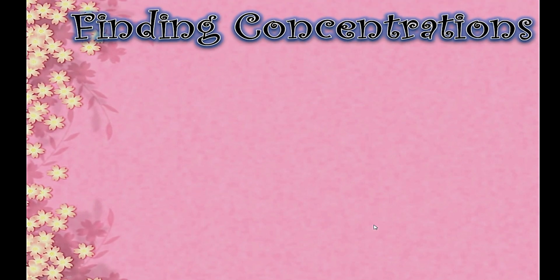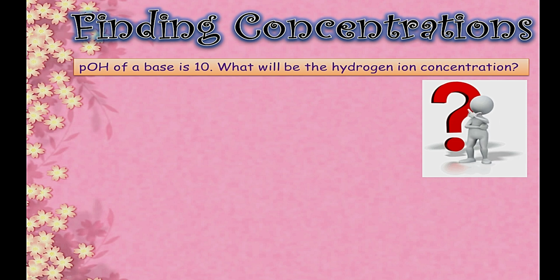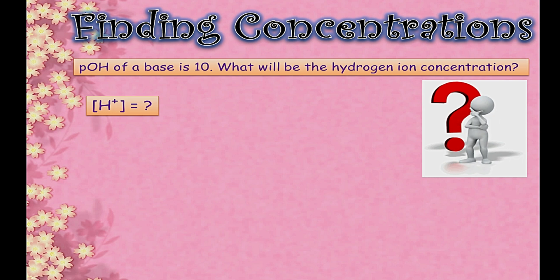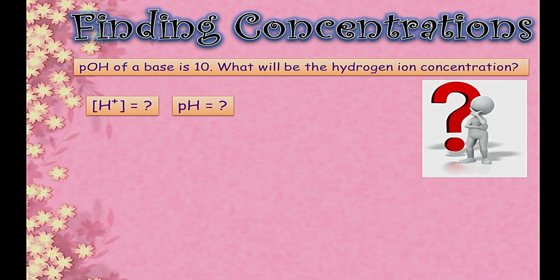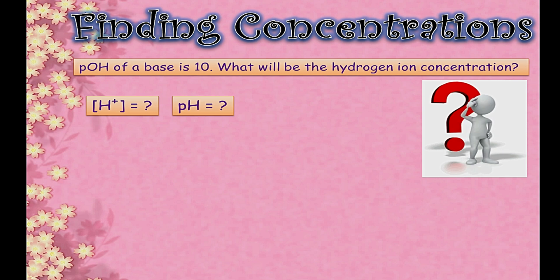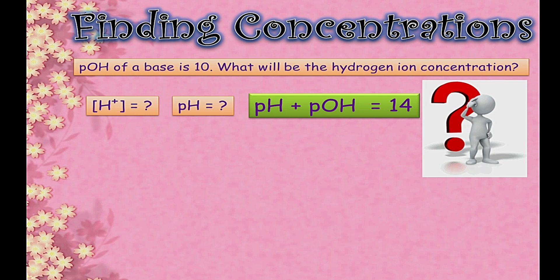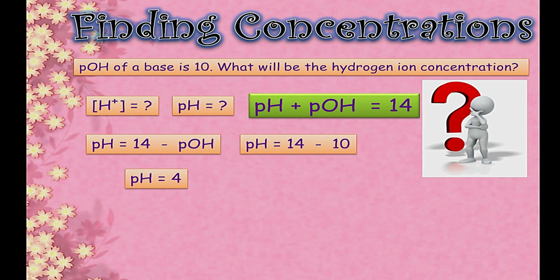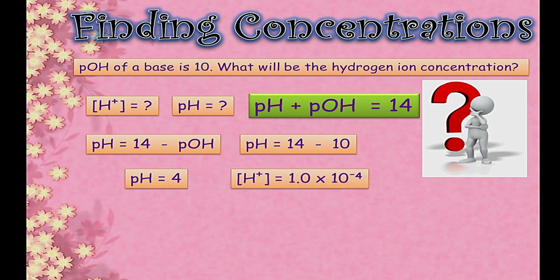Let's see more examples. If the pOH of a base is 10, what is the hydrogen ion concentration? Since pOH is given, you can find hydroxide ion concentration, but hydrogen ion concentration requires pH. So first convert: pH = 14 − pOH = 14 − 10 = 4. Now with pH = 4, the hydrogen ion concentration is 1 × 10⁻⁴.